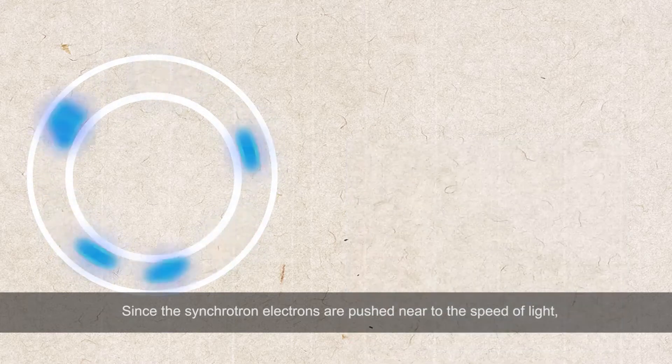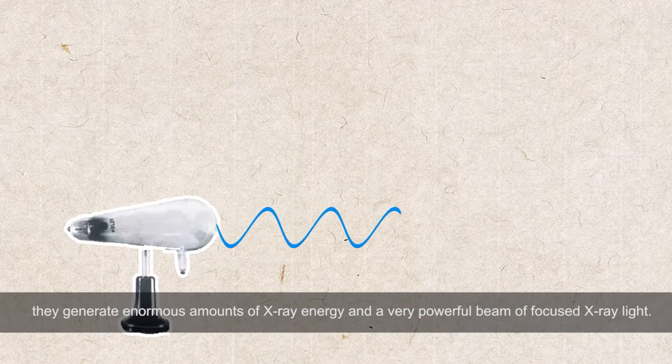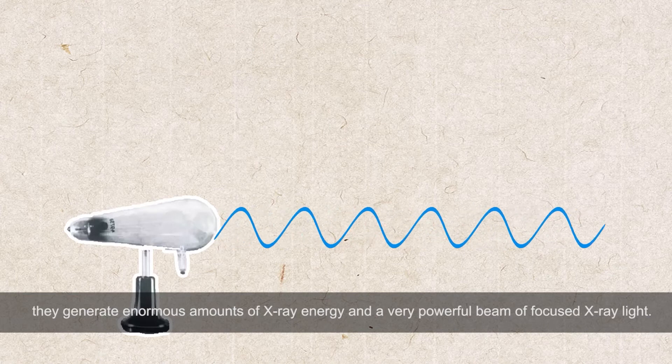Basic physics suggests that any time a charged particle is accelerated, it generates light. The type of light depends on the energy of the electrons and the magnetic field that pushes them around the circle. Since the synchrotron electrons are pushed near to the speed of light, they generate enormous amounts of X-ray energy and a very powerful beam of focused X-ray light.